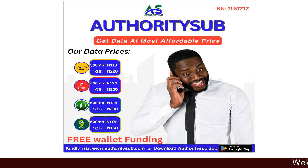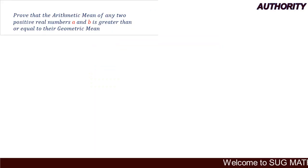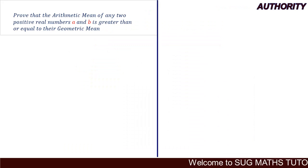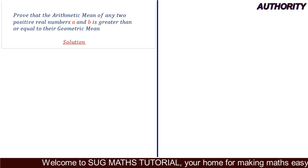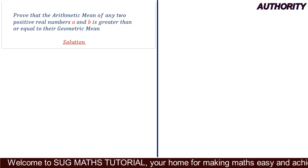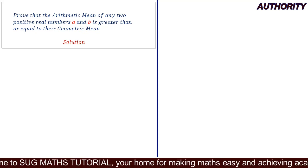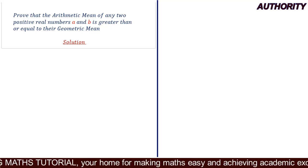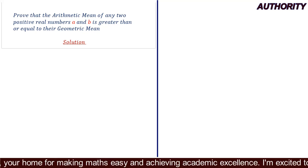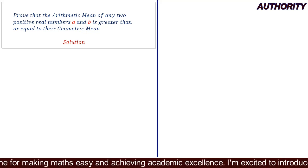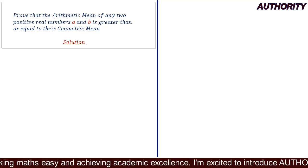Alright, welcome. Today let's take a look at this particular problem: prove that the arithmetic mean of any two positive real numbers a and b is greater than or equal to their geometric mean. I want you to pay close attention — it's very simple. First of all, understand the question itself before devising a model to the problem.